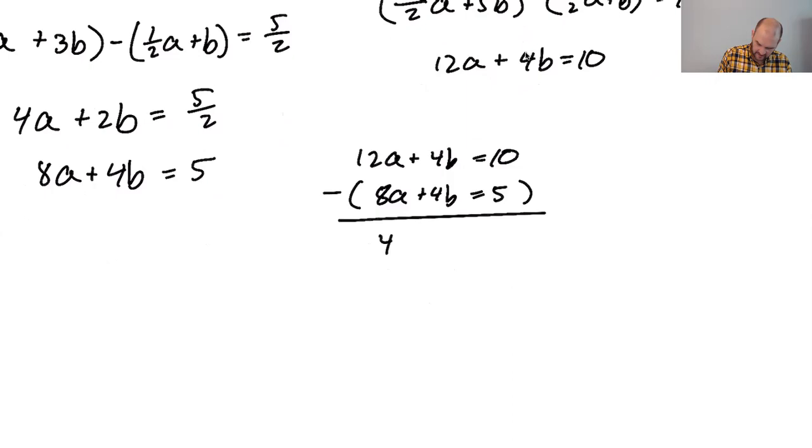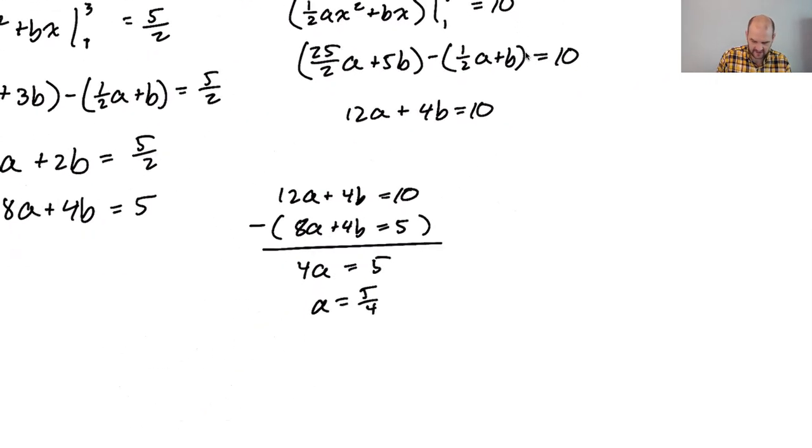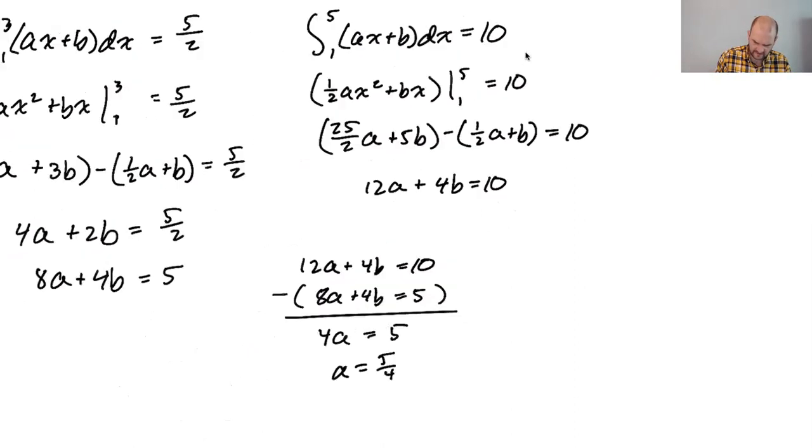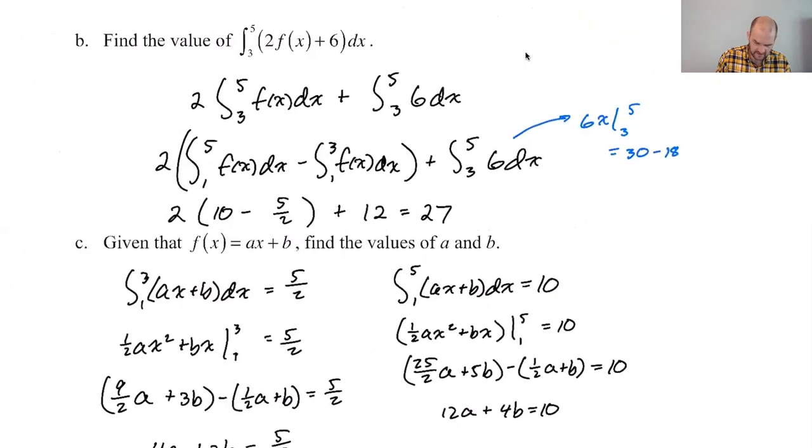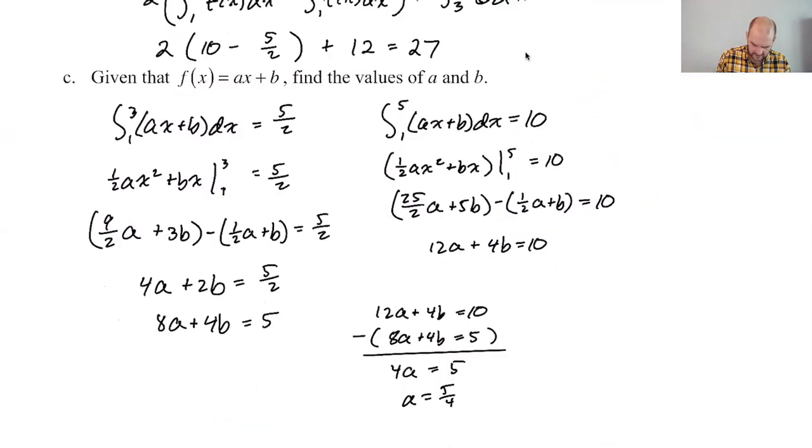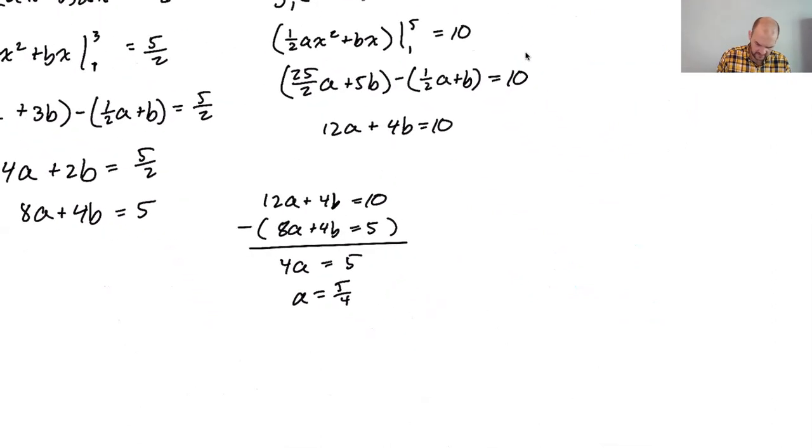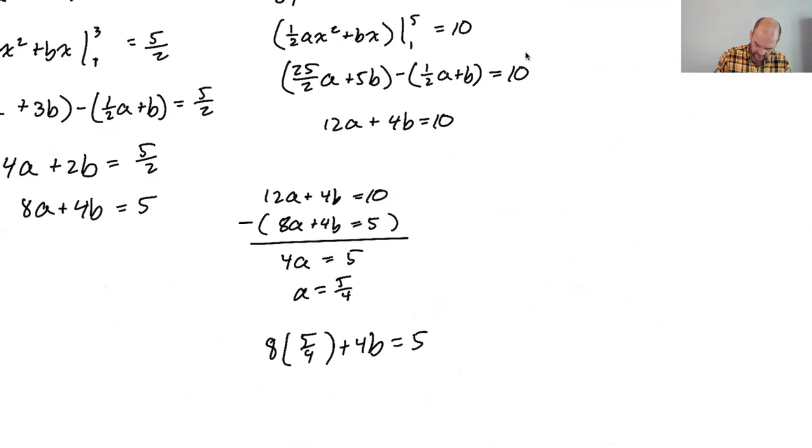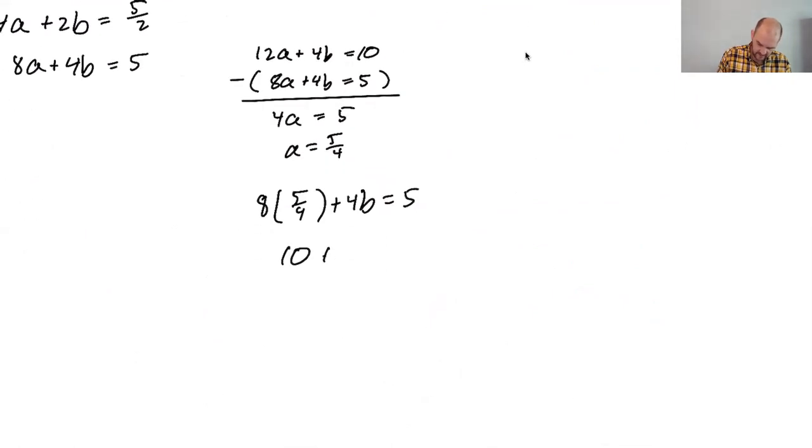One half ax squared plus bx from one to five and that time it will equal ten. So we get 25 halves a plus five b. One half of a plus b equals ten. So we get 12 a plus four b equals ten. So I'm going to combine them. I'm going to do this one minus this one. So 12 a plus 4 b equals ten. And I'm going to subtract 8 a plus 4 b, which equals five. So that gives me 4 a is equal to five. So a is 5 fourths.